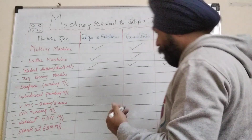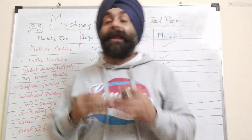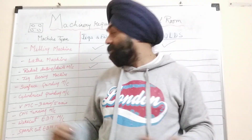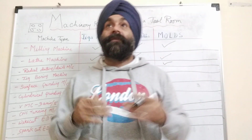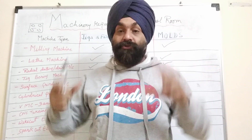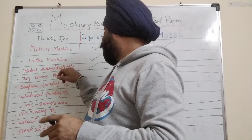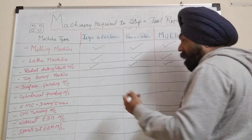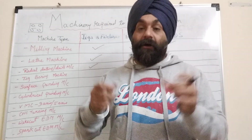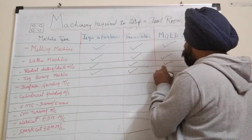Jig boring is used when you need very accurate drilling or boring — down to 10 to 30 microns. For press dies, you would clamp the top and bottom plate together and use jig boring to achieve 10 to 20 micron accuracy for pillar and bush fits. It is also used for fixtures requiring very accurate locators. Jig boring is applicable across all three variants.